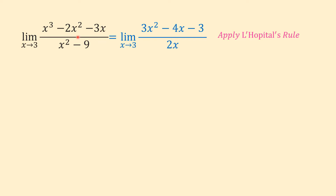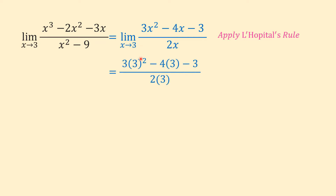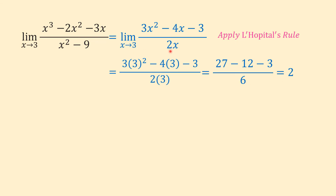We take the derivative of the numerator and denominator separately. The derivative of x³ is 3x², derivative of 2x² is 4x, and derivative of 3x is 3. The derivative of the denominator x² − 9 is 2x. Now we plug in 3: (3(3²) − 4(3) − 3) over (2(3)) = (27 − 12 − 3) over 6 = 12/6 = 2. The value of this limit is 2.